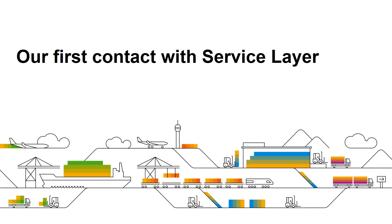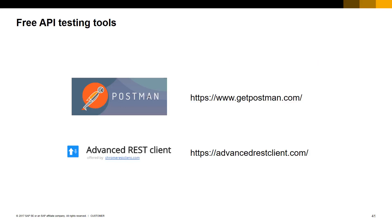In order to understand how to access the service layer entities and services, we will have a look at some API testing tools that can be used to easily have our first experience with the service layer. There are many API testing tools. In this slide we list two: Postman and Advanced REST Client. You can download them for free at the provided URL. The following examples use the Postman tool, but the Advanced REST Client is similar to use for the same kind of testing.